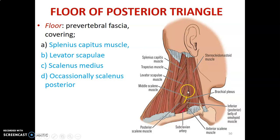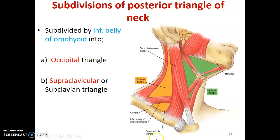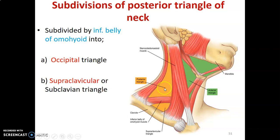The posterior triangle is subdivided into two parts: an upper occipital triangle and a lower supraclavicular triangle. It is divided into these two by the inferior belly of the omohyoid muscle.